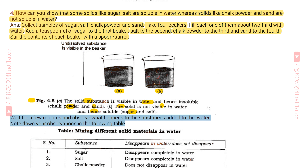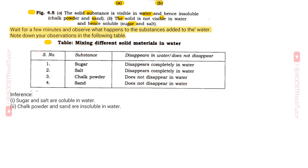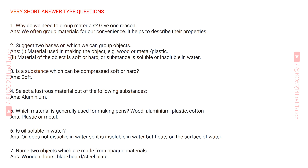Note down your observations in the following table. Substance and result: Sugar — disappears completely in water. Salt — disappears completely in water. Chalk powder — does not disappear in water. Sand — does not disappear in water. Inference: Sugar and salt are soluble in water; chalk powder and sand are insoluble in water. We have completed extra questions from Chapter 2: Sorting Materials into Groups.